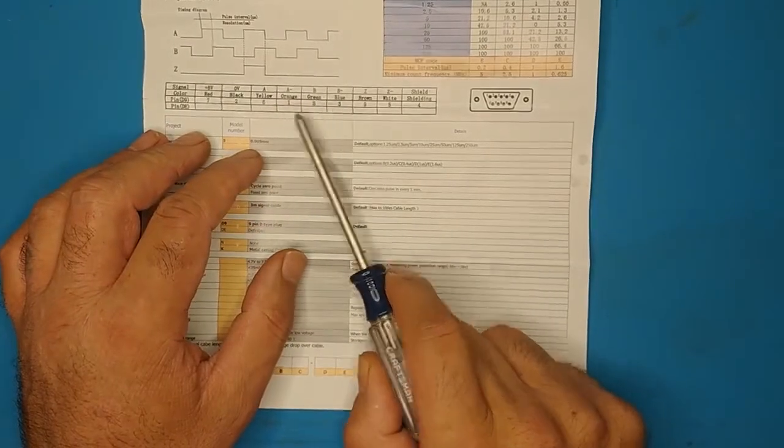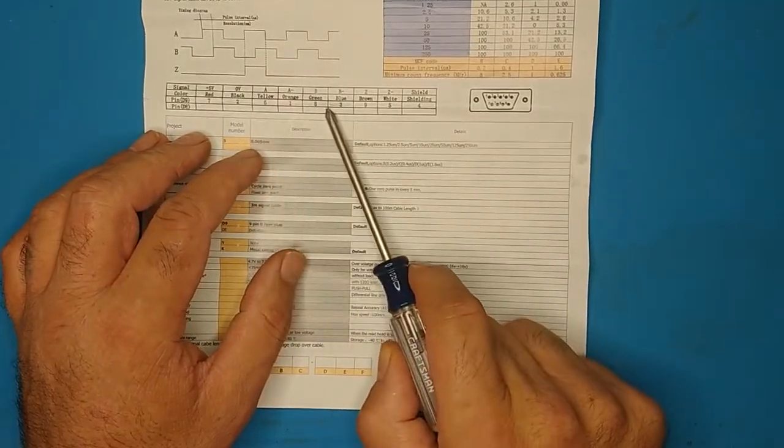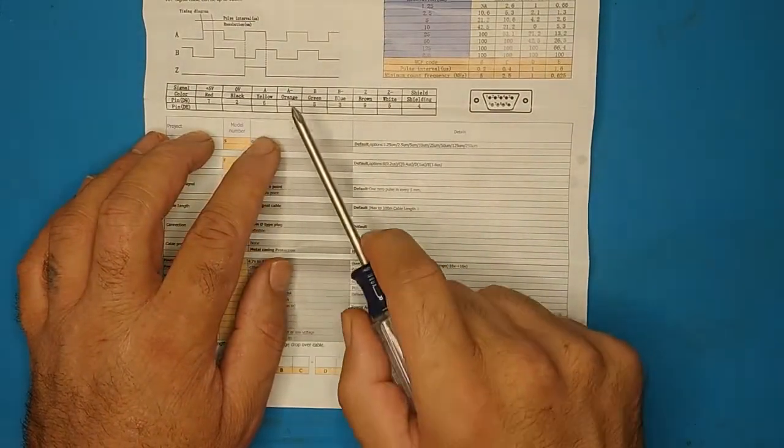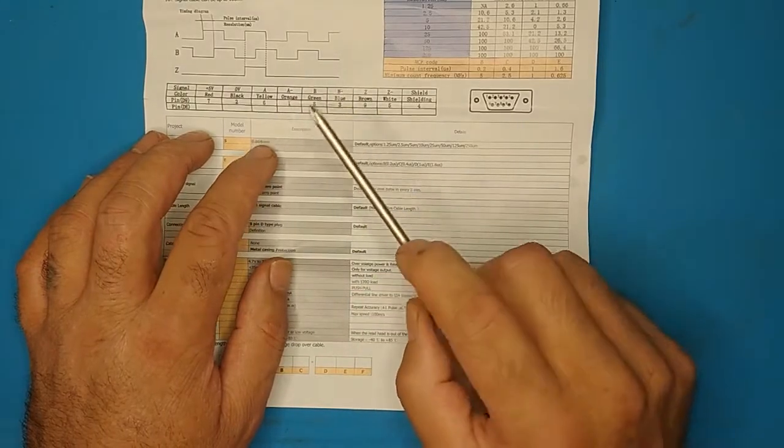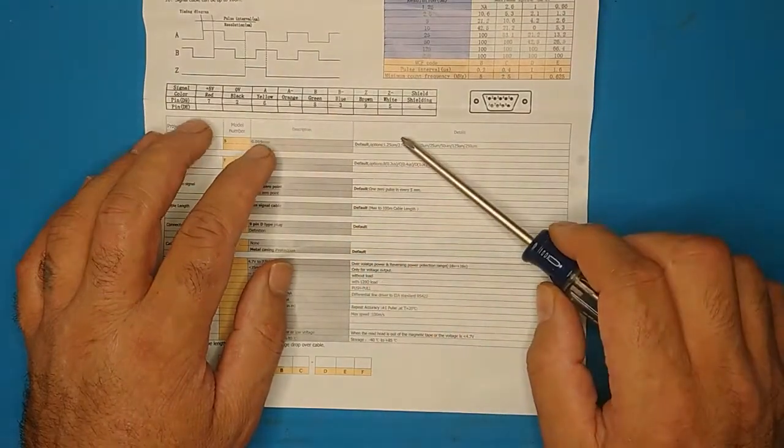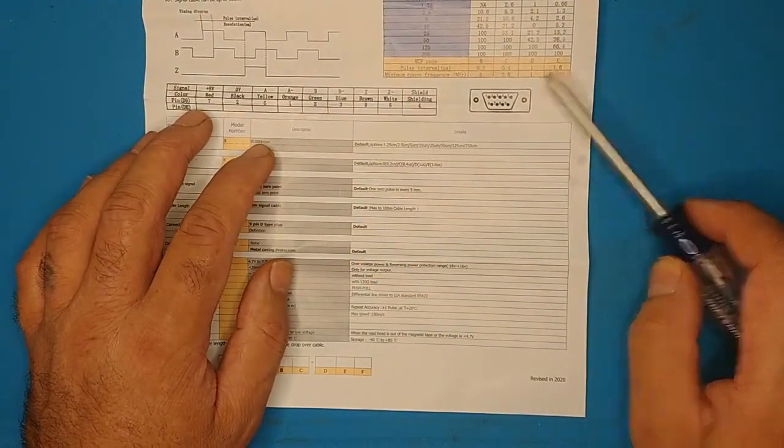Optionally, you can have A minus and B minus, which are the differential. I'm not sure exactly what that does, but they're optional. So if your scale doesn't have A minus and B minus, or A prime and B prime, that's totally fine. You just need A and B.